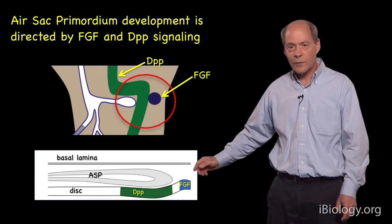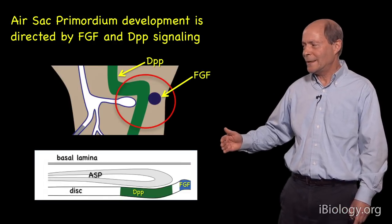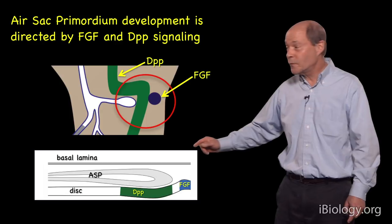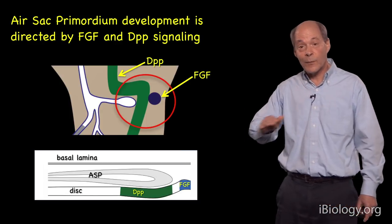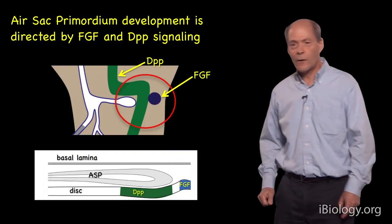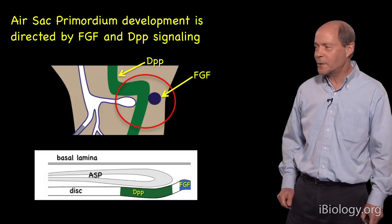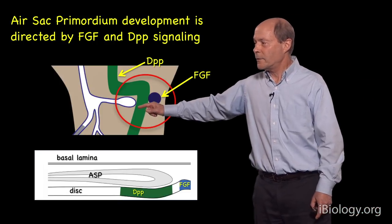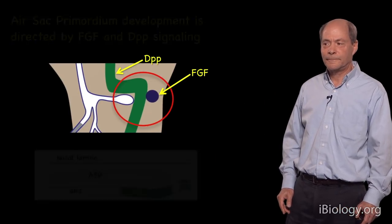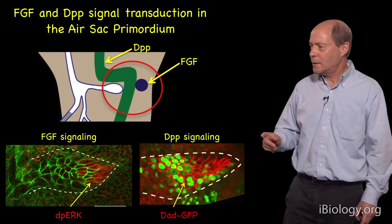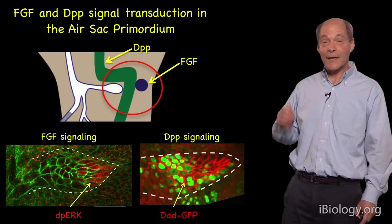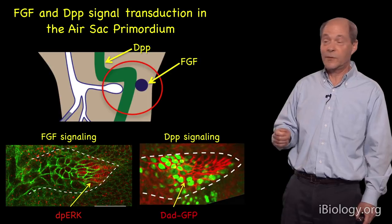This cartoon shows a sagittal cross-section: here's the tracheal tube and air sac primordium with its lumen, lying underneath the basal lamina of the disc. Below are the disc epithelial cells, indicated in green — those expressing DPP — and those expressing FGF. We can show that these air sac primordium cells do receive DPP and FGF from the disc and activate signal transduction in response to those two signaling proteins.